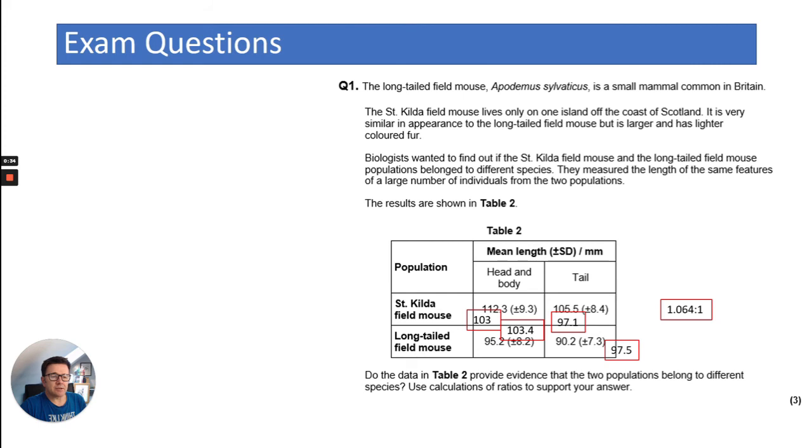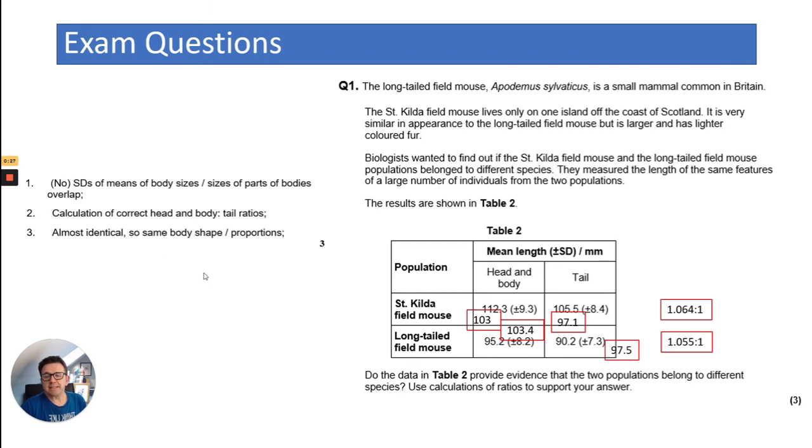And then I'll look at the ratios. Well, the ratios are extremely similar. So if they're similar, the standard deviations, the size of the parts of bodies overlap. The calculations, there's the calculations. And they show that they're almost identical. So they have the same body shape and proportions. So they're unlikely to be different species.